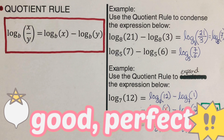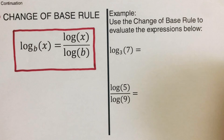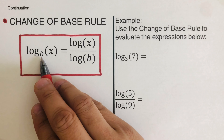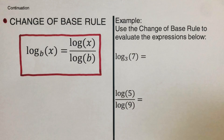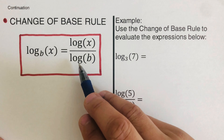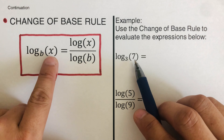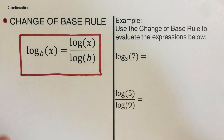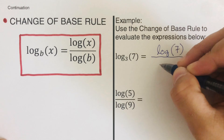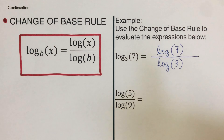Now let's move on to the change of base rule. This rule says that log of x to the base b equals log of x over log of b. To evaluate log of 7 to the base 3 using this rule, we identify x as 7 and b as 3, so we rewrite it as log of 7 over log of 3.